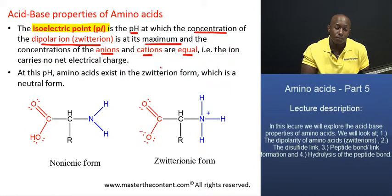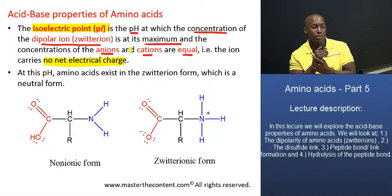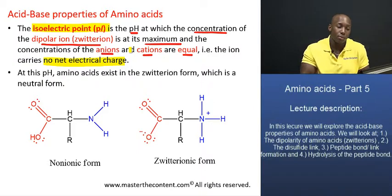So they cancel each other out. In this case, the ion will have no net electrical charge. So that is what we refer to as the isoelectric point.